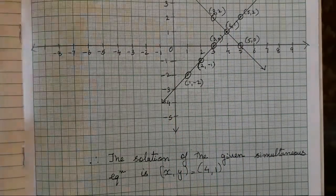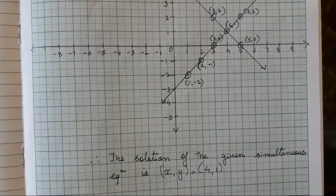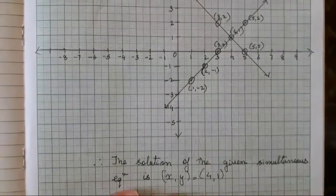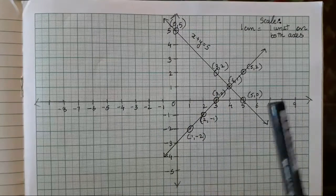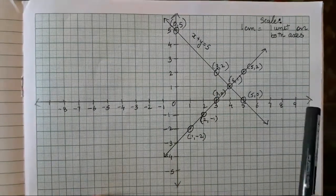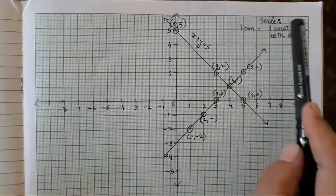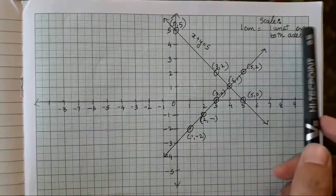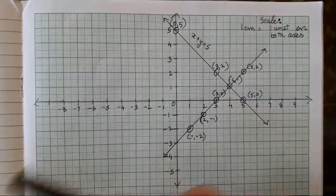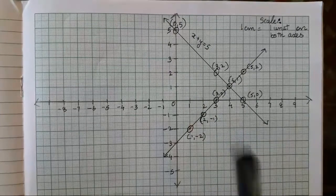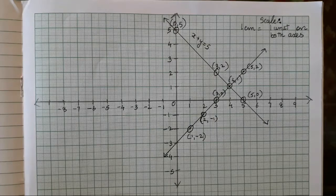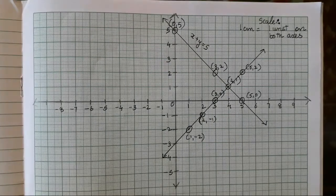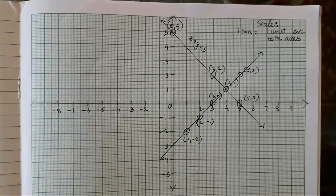The next sum will be solved in tomorrow's video as this video is getting too lengthy. I hope you all have understood till here — practice these sums and let me know in the comment section if there is any problem. For drawing the graph, it's the same basic x-axis and y-axis with scale 1 cm = 1 unit, as we've been drawing since 6th standard. The different part is showing the intersection lines using the given equations. See you in the next video — take care, bye.